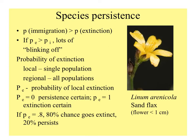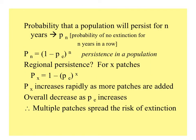If the probability of extinction is greater than the probability of immigration, we would expect to see lots of blinking off. And if that species were represented by a single population, it might easily go extinct. But with multiple patches, the probability of extinction overall is much reduced because the more patches you have, you multiply those probabilities of extinction together and that number gets smaller. For any population, we could look at p sub n, the probability of no extinction for n years in a row.